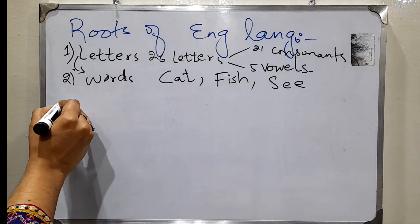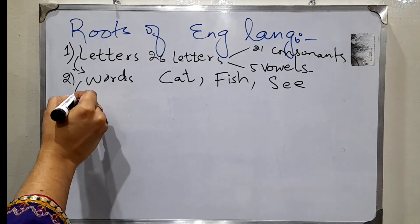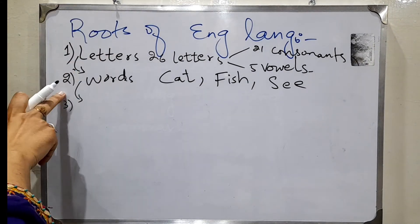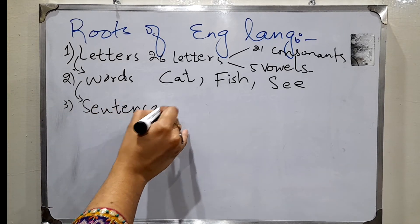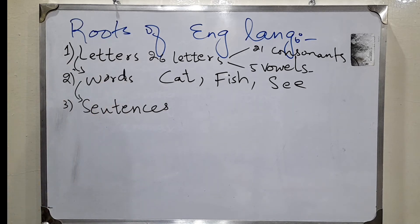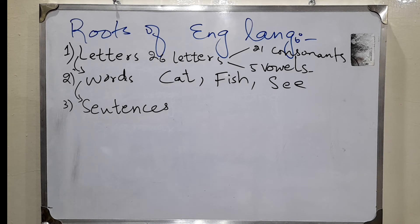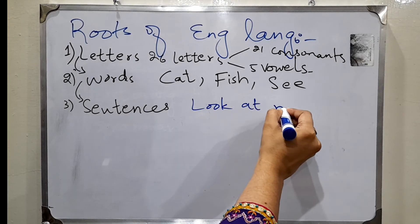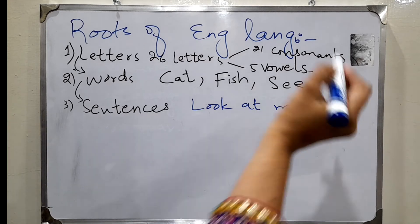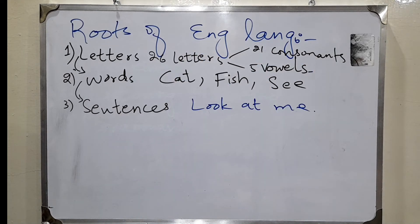The next root: the most basic is letters, then after words we will move to sentences. After the creation of words, we will be able to make sentences — two-word sentences, three-word sentences, it depends. For example: 'Look at me' — this is a three-word sentence.